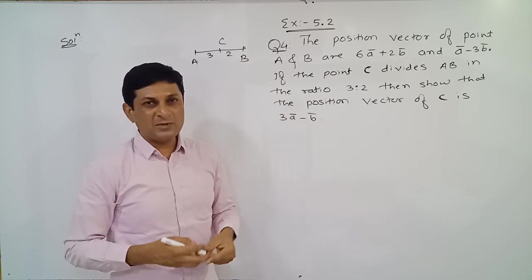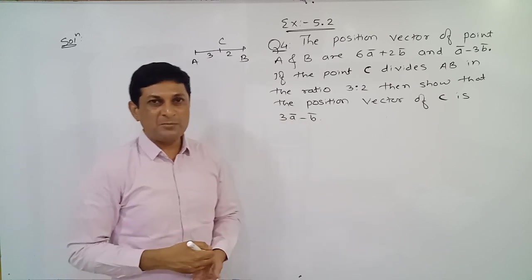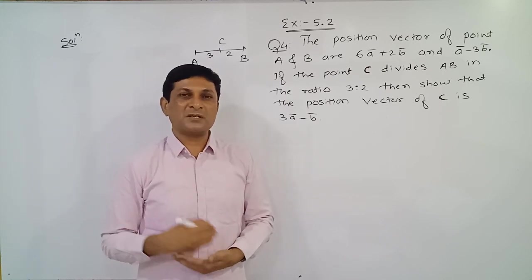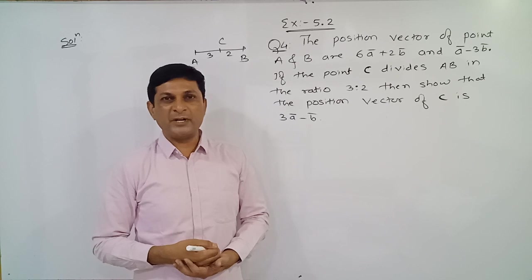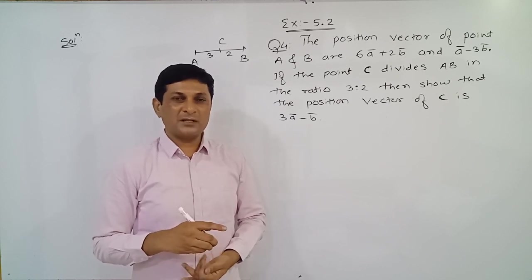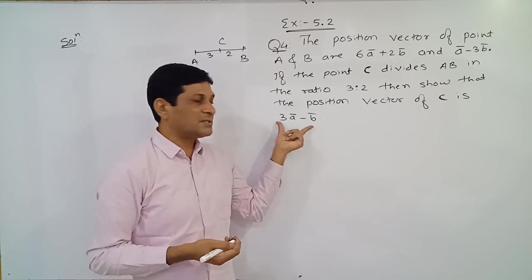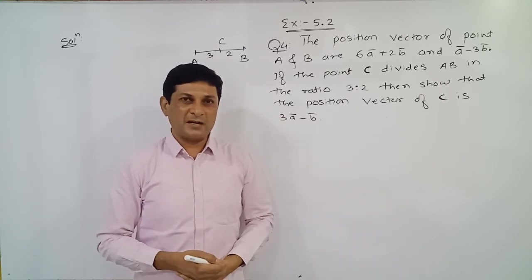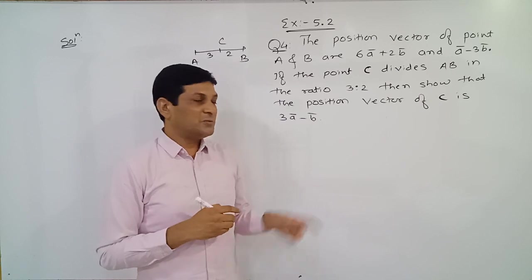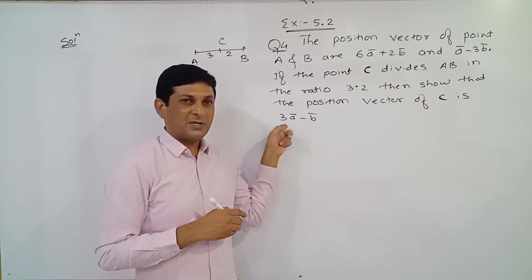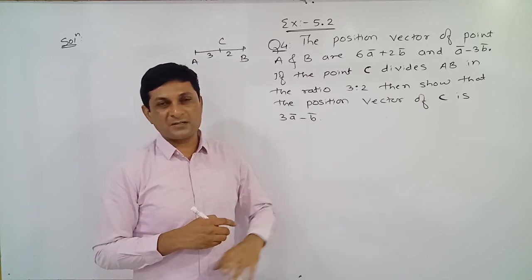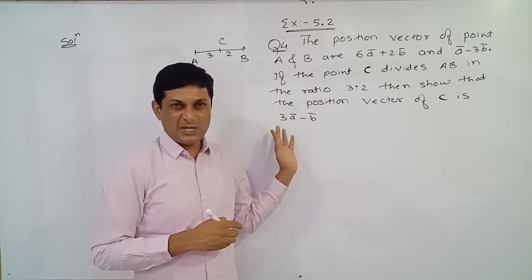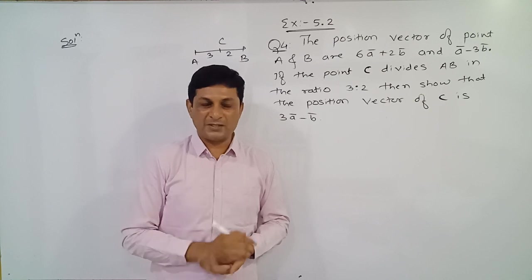It is not given whether point C divides segment AB internally or externally. We will first suppose that point C divides segment AB internally. If applying internal division gives us the required result, there is no need to solve the second part. But if internal division does not give the required value, then we have to apply external division.